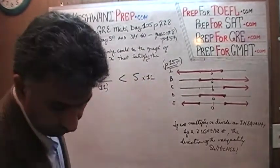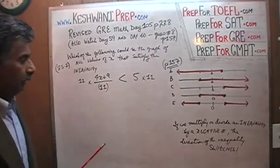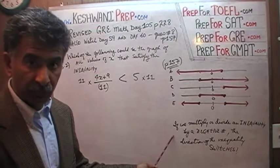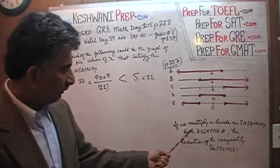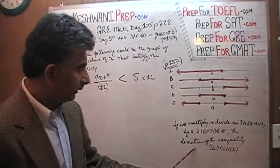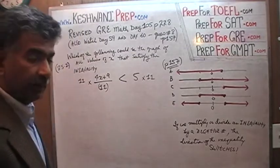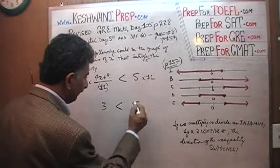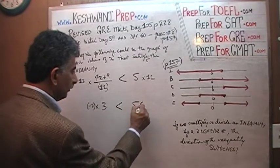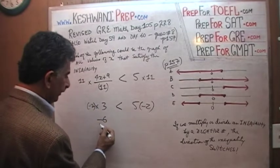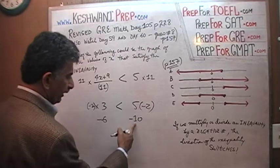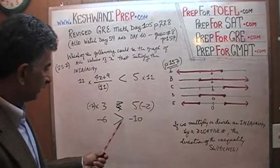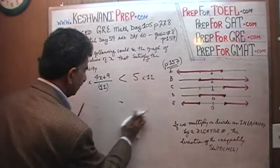Since it is a positive 11 we are multiplying both sides by, we don't have to worry about switching the direction of the inequality. Had we multiplied by a negative number, the direction switches. If we multiply or divide an inequality by a negative number, the direction of the inequality switches. For example, we know that 3 is less than 5, but if you multiply both sides by negative 2: negative 2 times 3 is negative 6, and negative 2 times 5 is negative 10.